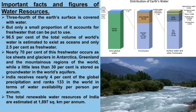India receives 4% of global precipitation and its rank is 133 in the world in terms of availability of water. The total renewable water resources of India are estimated at 1,897 cubic kilometers per annum — this is the area over which water resources are flowing.